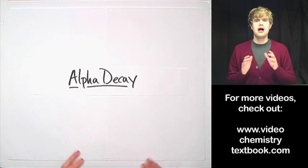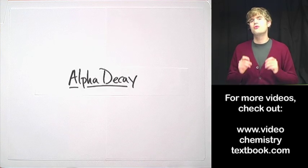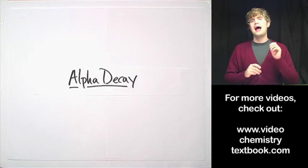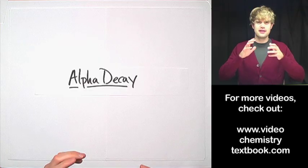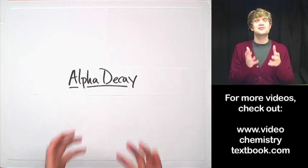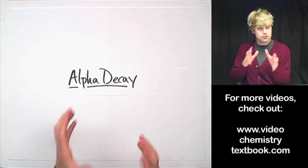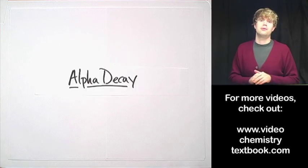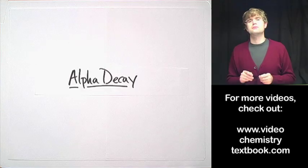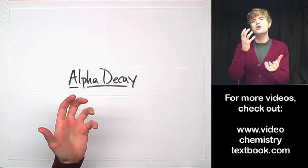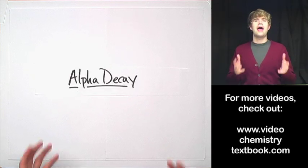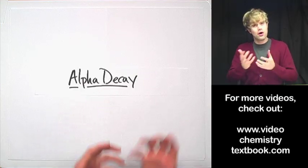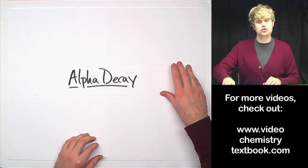Let's talk about alpha decay. Alpha decay is one type of radioactive decay that atoms can do. As we said earlier, atoms do radioactive decay because they don't like their lives. There's something that they don't like about themselves — they're super unstable and they want to change this to become happier, to become more stable. When we're talking about atoms, it's the number of protons and neutrons in the nucleus that determines whether the atom is stable or not. So when they do radioactive decay, they want to change that number of protons and neutrons.